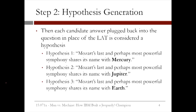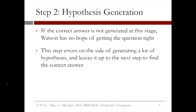Each candidate answer plugged back into the question in place of the LAT is considered a hypothesis. For the question about Mozart's symphony, hypothesis one would be the question with Mercury in place of "this planet," hypothesis two would have Jupiter, and hypothesis three would have Earth. If the correct answer is not generated at this stage, Watson has no hope of getting the question right. Therefore, this step errs on the side of generating a lot of hypotheses and leaves it up to the next step to find the correct answer.